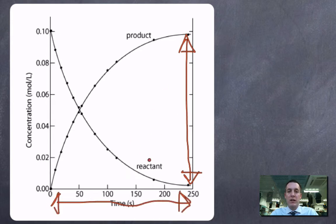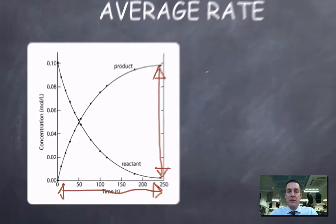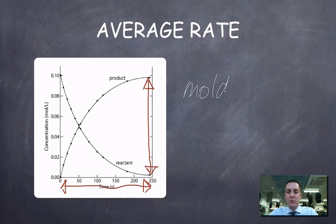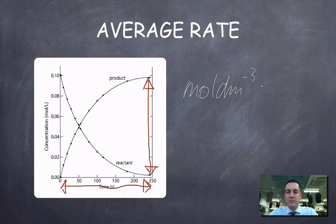So it's a simple rise over run calculation if this was a straight line, but it's not. It's a curve, but nonetheless we can calculate an average rate. So you can see the rate is constantly changing here, because if the rate is given in moles per dm cubed per second, or on this graph moles per liter per second, but we know that a liter is the same as a dm cubed.